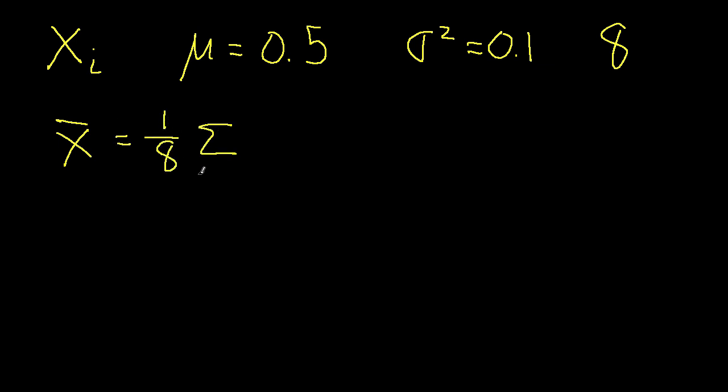So let's do an example of the type of computation that you typically do in the central limit theorem. Let's suppose that each of my xi's have a mean of 0.5 and a variance of 0.1. And let's suppose that I have 8 of these random variables that I'm going to average. So x-bar is going to be 1 over 8 times the sum i going from 1 to 8 of xi.